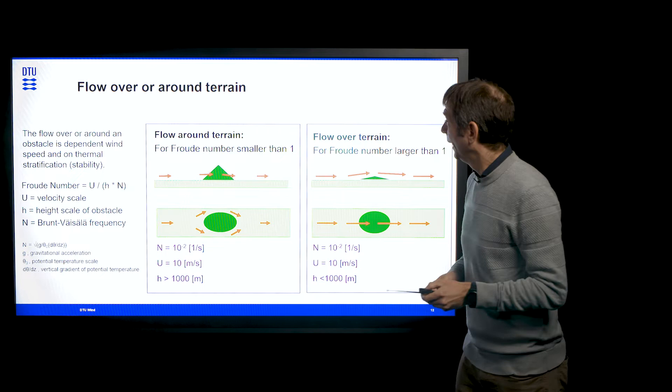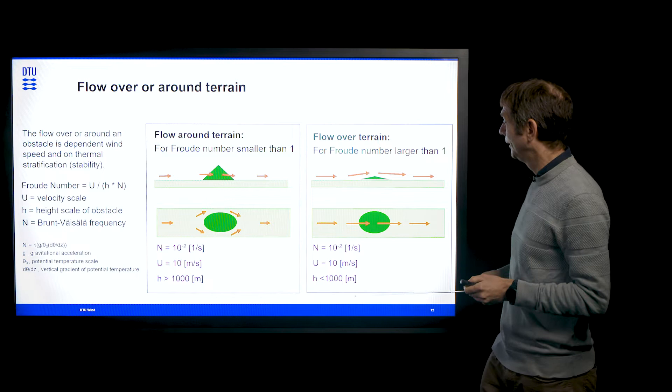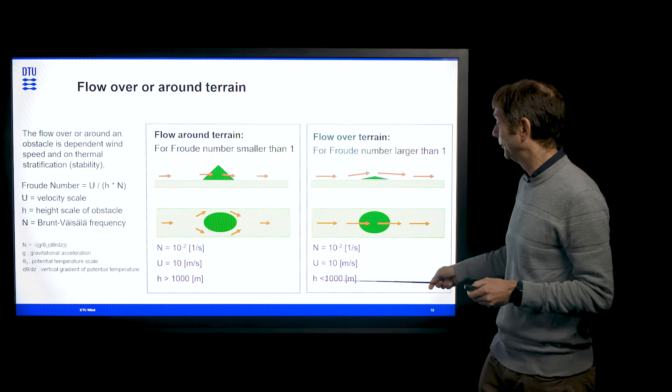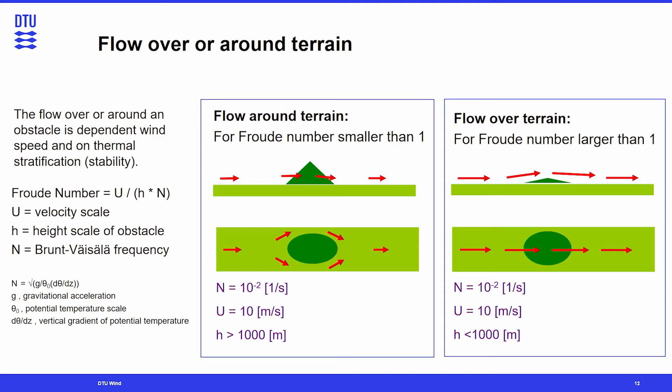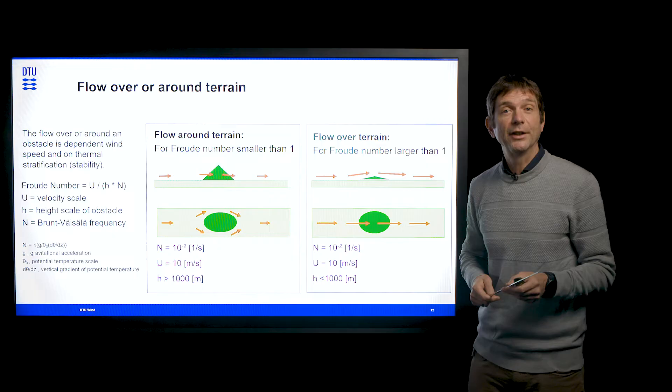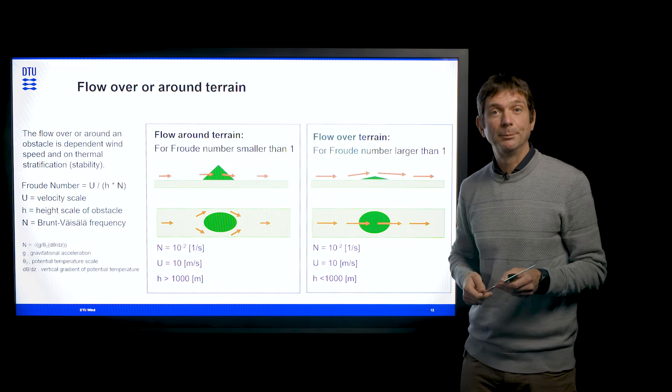When the Froude number is larger than one — keeping the Brunt-Väisälä frequency and wind speed the same but reducing the height of the hills to below 1,000 metres — the flow is able to go over the terrain undisturbed or less disturbed. That is more like what we see over the flow over Denmark.